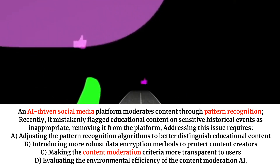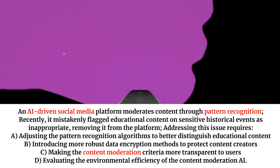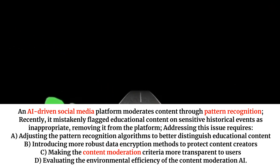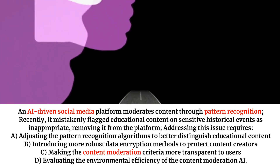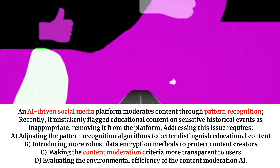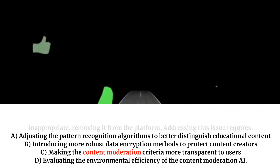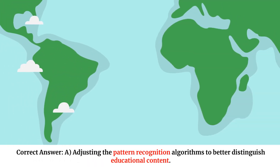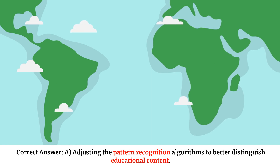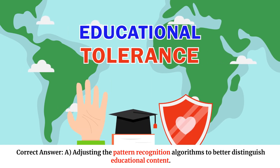Addressing this issue requires: A. Adjusting the pattern recognition algorithms to better distinguish educational content. B. Introducing more robust data encryption methods. C. Making the content moderation criteria more transparent to users. D. Evaluating the environmental efficiency of the content moderation. Correct answer: A — Adjusting the pattern recognition algorithms to better distinguish educational content.